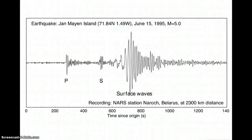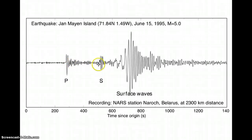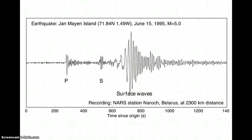If you look at a seismogram — that's the printout — you'll notice a couple of things. We start on the left side where it's pretty flat, and then we get our first spike. That first spike is the arrival of the P waves, one of the body waves. Then the spikes get smaller again and then get higher. That second tall spike is the arrival of the S waves, the other kind of body waves. Afterwards, we see some really large spikes — those are the surface waves.